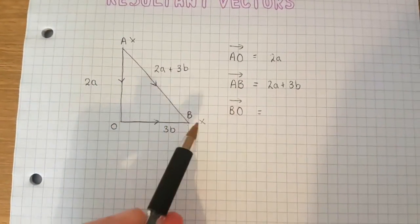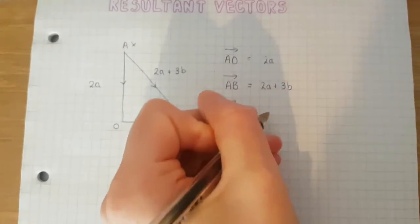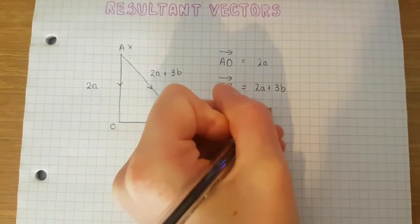So if O to B is positive 3b, going the other way, the opposite way, I can say that B to O is negative 3b.